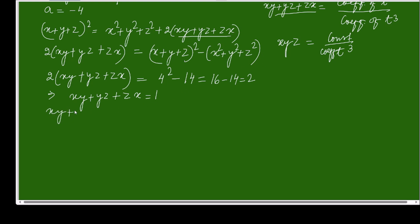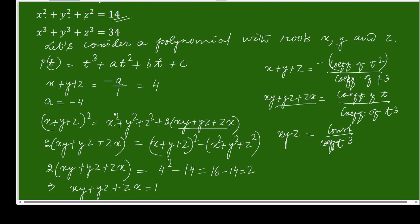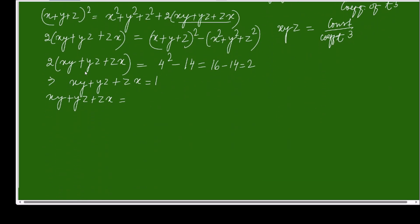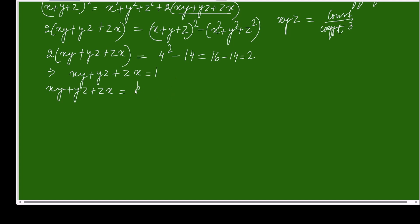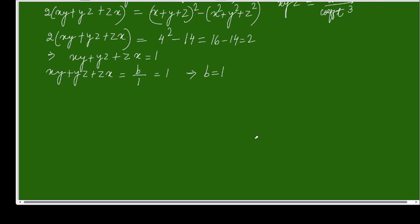Since xy + yz + zx = b/1 and this equals 1, we get b = 1. So the polynomial in terms of t is p(t) = t³ − 4t² + t + c.